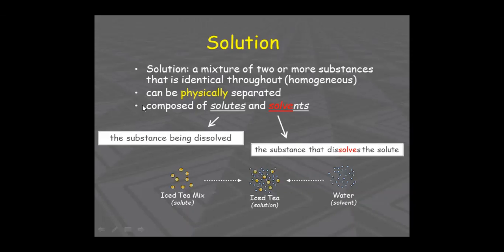A solution is a mixture of two or more substances that is identical throughout — homogeneous, looking the same everywhere. A solution is composed of two components: solute and solvent.